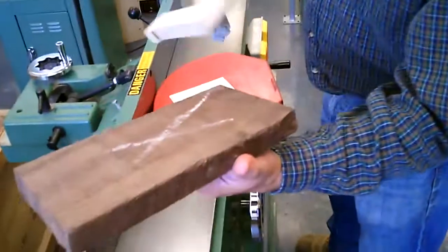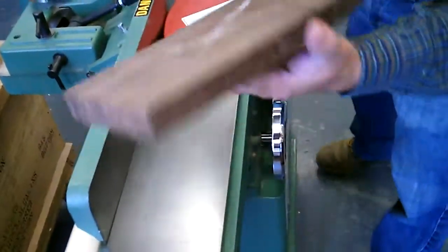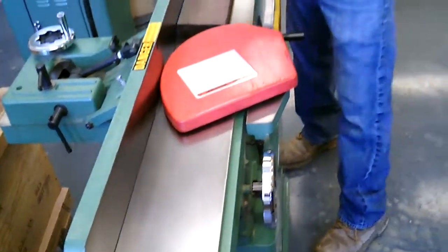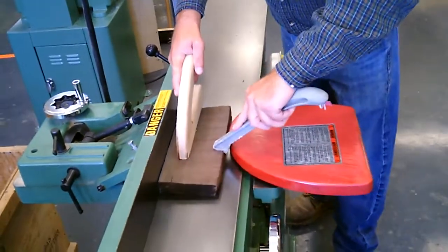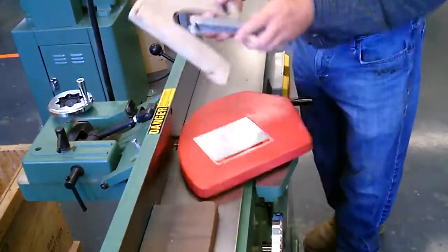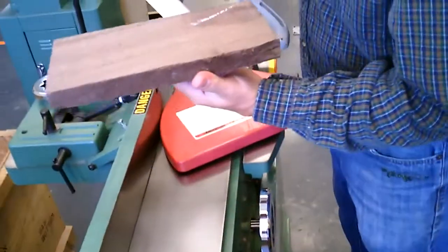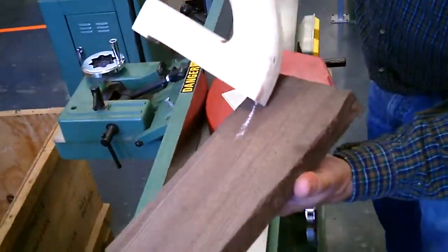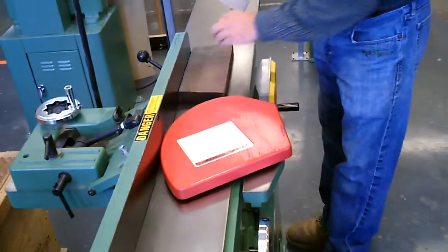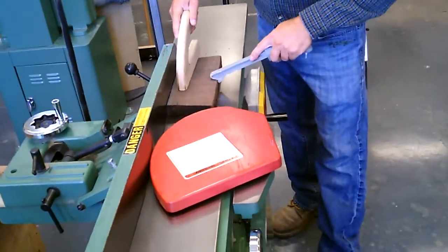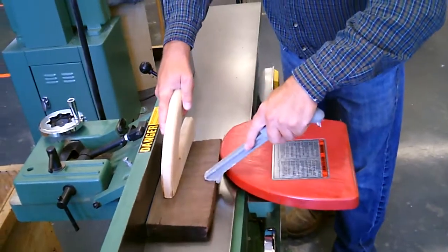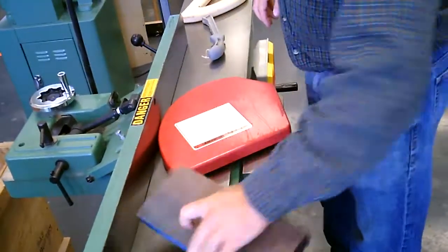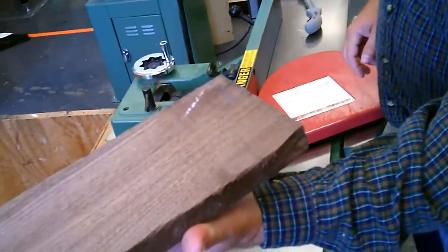Then we take a cut. As you can tell, it hasn't cleaned up the whole face, so we take another one. As you can tell, it's just a little bit more here. One more cut. And now the board is perfectly flat.